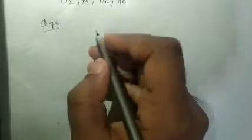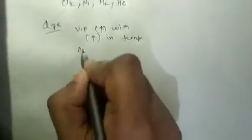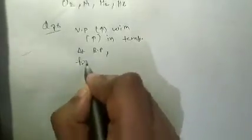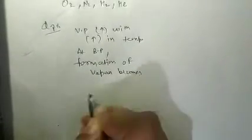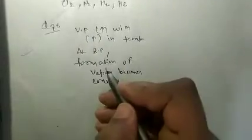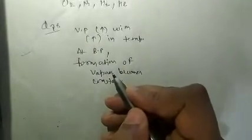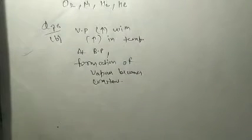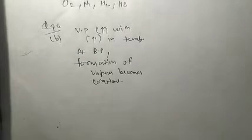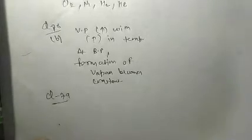Question 78: Does vapor pressure increase with temperature? Yes, vapor pressure increases with increase in temperature, but only up to the boiling point. At the boiling point, formation of vapors becomes constant. So vapor pressure increases with temperature up to the boiling point. Question 78, option B is correct.